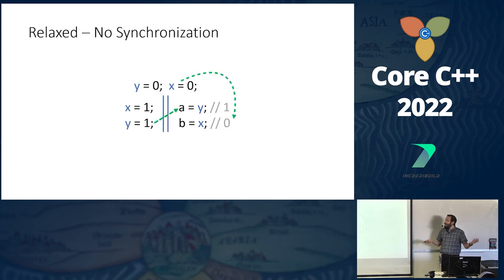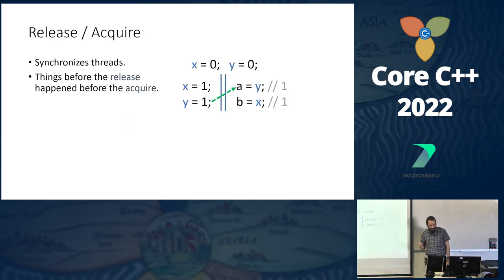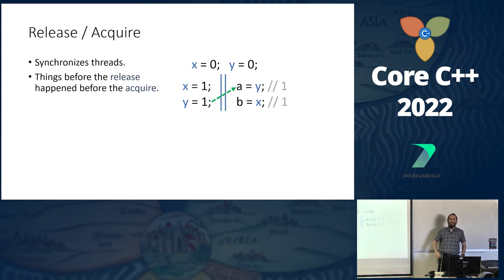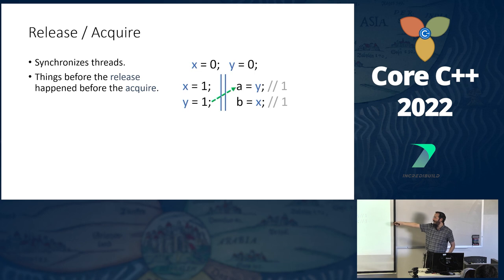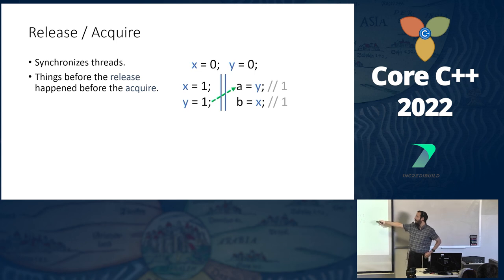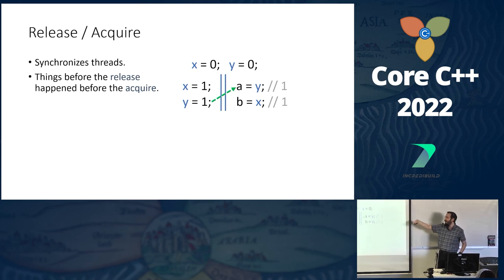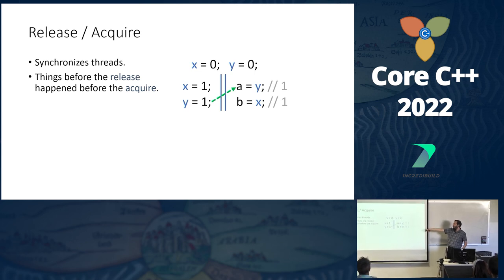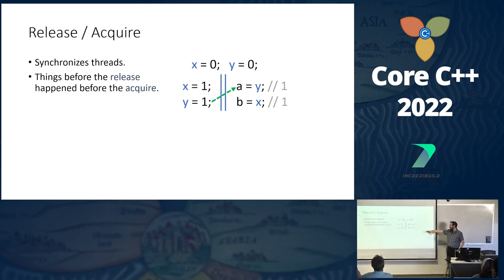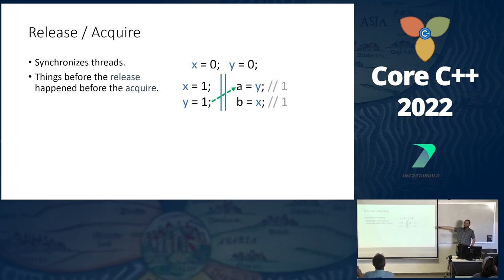Because relaxed is too weak, we need release-acquire for synchronization. Every write-release operation tells observers about everything that happened prior to it. If I read with an acquire operation — and it's very important that release and acquire match — then I become aware of everything that happened before the write. Specifically, if I read the value 1 from y written with release, I'm no longer allowed to read 0 for x — I must read 1, since the write of y tells me that write happened in the past.